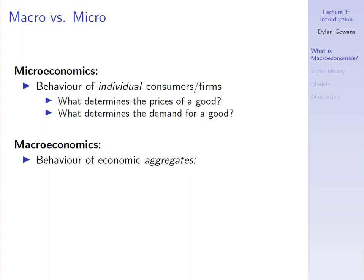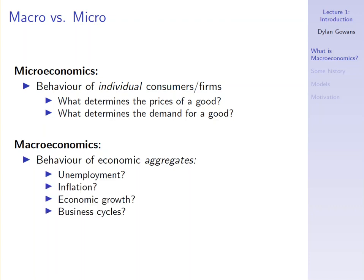To give you an example, macroeconomists might ask what determines unemployment, which is an economy-wide variable. What determines inflation? That's prices in general — not the price of a given good but the price level of the entire economy. What determines economic growth? Or what determines business cycles? These ups and downs, these swings in business conditions or in employment or in economic growth.